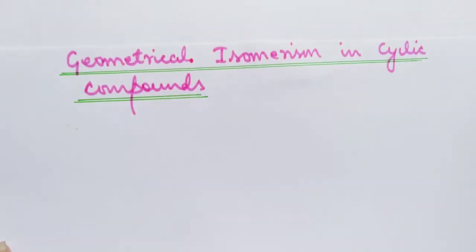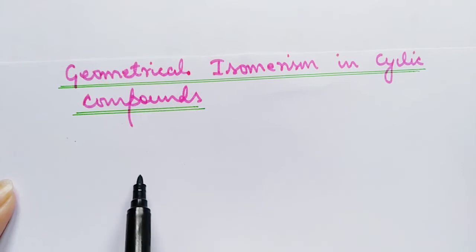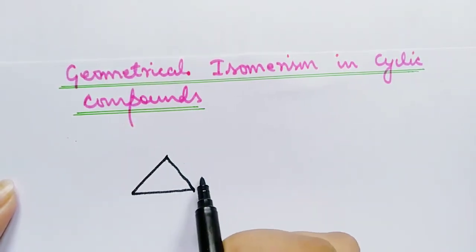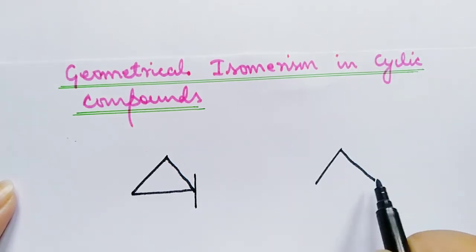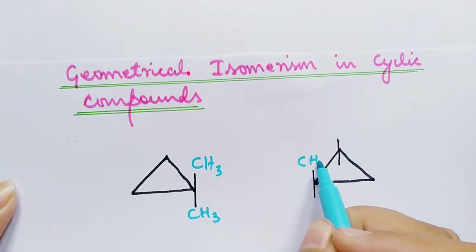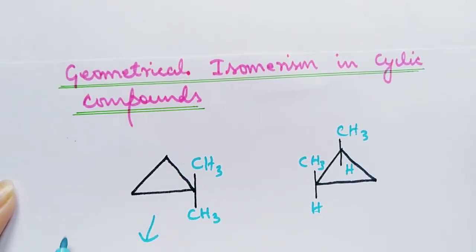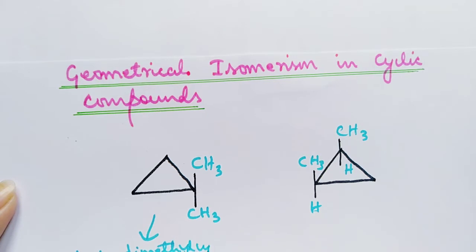In this video I'm going to explain about geometrical isomerism in cyclic compounds. Not all cyclic compounds show geometrical isomerism. To be more clear, consider these two cyclic compounds. This one is 1,1-dimethylcyclopropane.